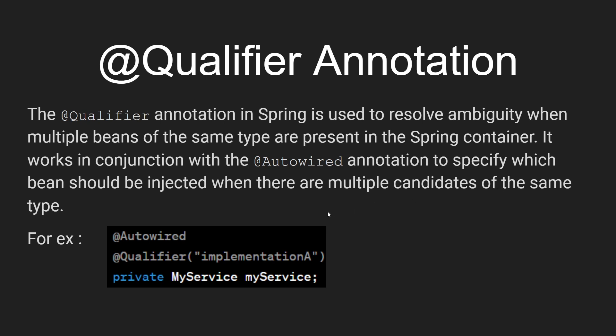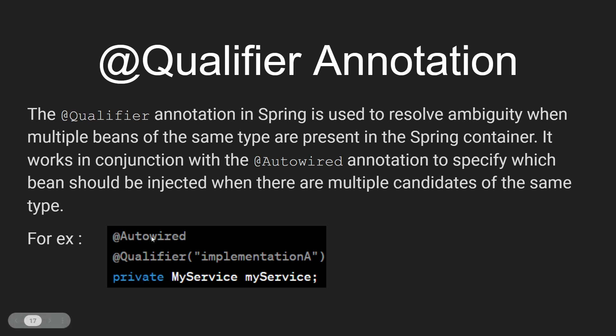So first of all, I understand you may be confused. Earlier, what we studied is: we make a class, we make that class a @Component, and when we want the object of that class we just use @Autowired. But now a new annotation is coming into the picture — @Qualifier. It says: if there are two or three beans of the same type and we do simple autowiring, there can be ambiguity and Spring can get confused about which bean is required.